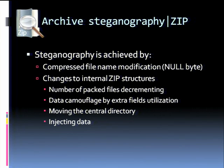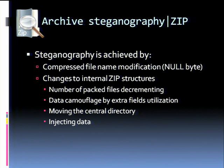There are other ways you can successfully hide files from all archive processors, such as decreasing the number of packed files inside the header. If you have the last file packed, you just decrease the number and the last file will not be registered. You can also use extra fields in the zip file documentation to camouflage header data, move the central directory to hide data from the start of the archive, and inject new data.